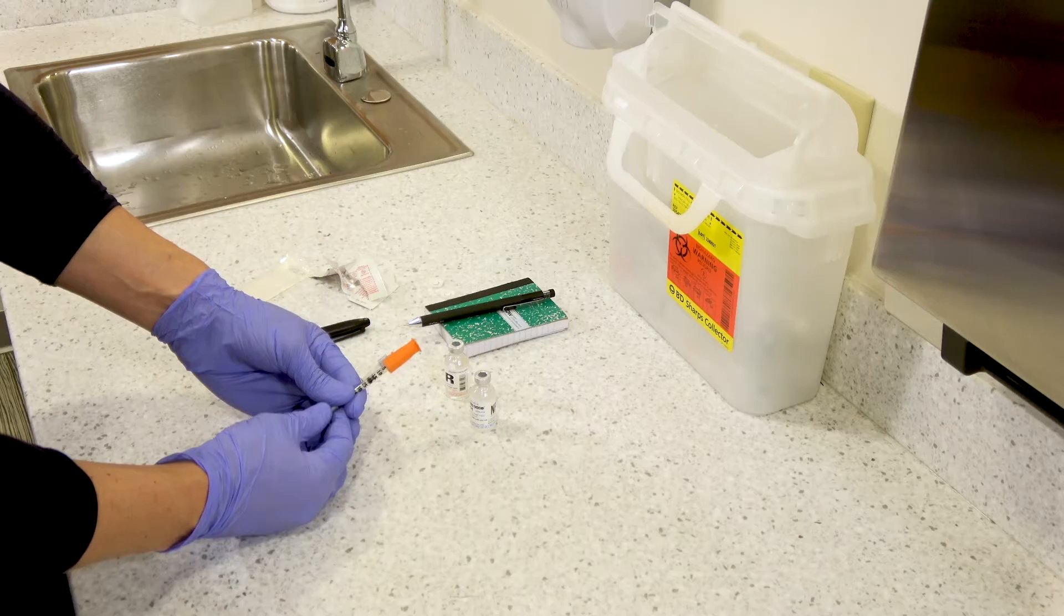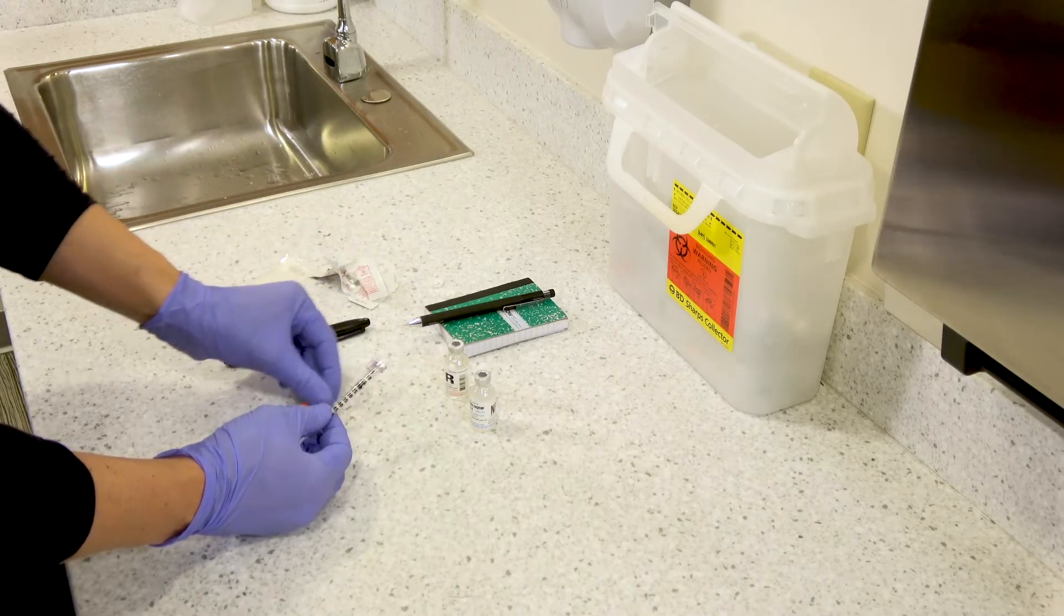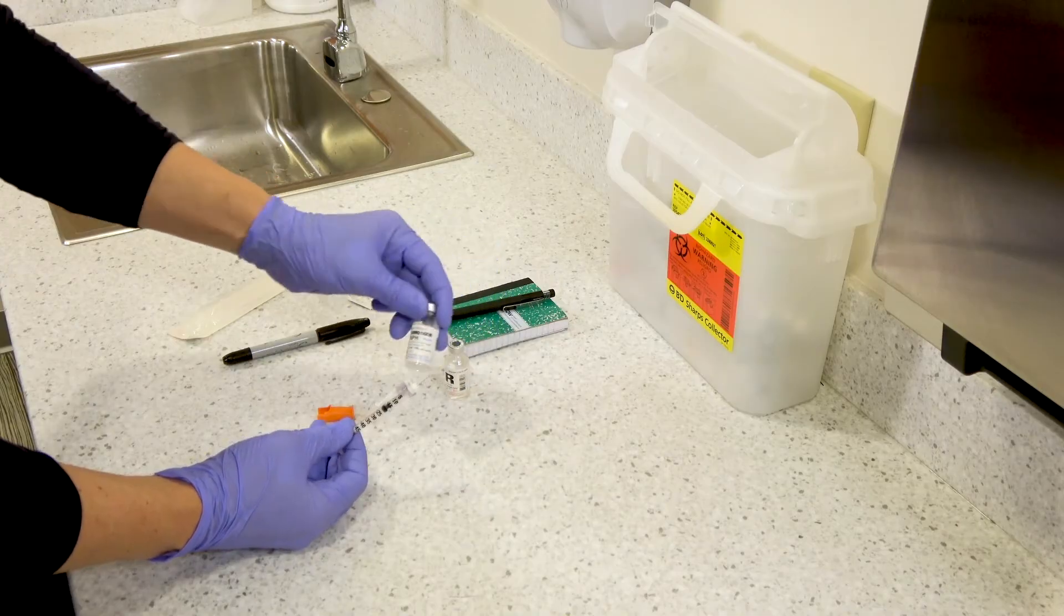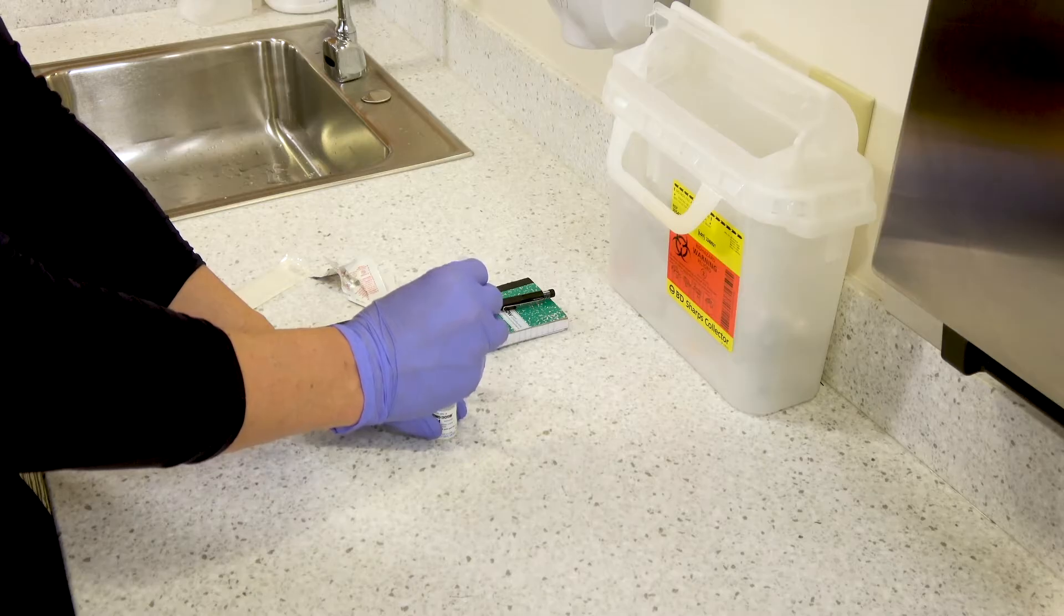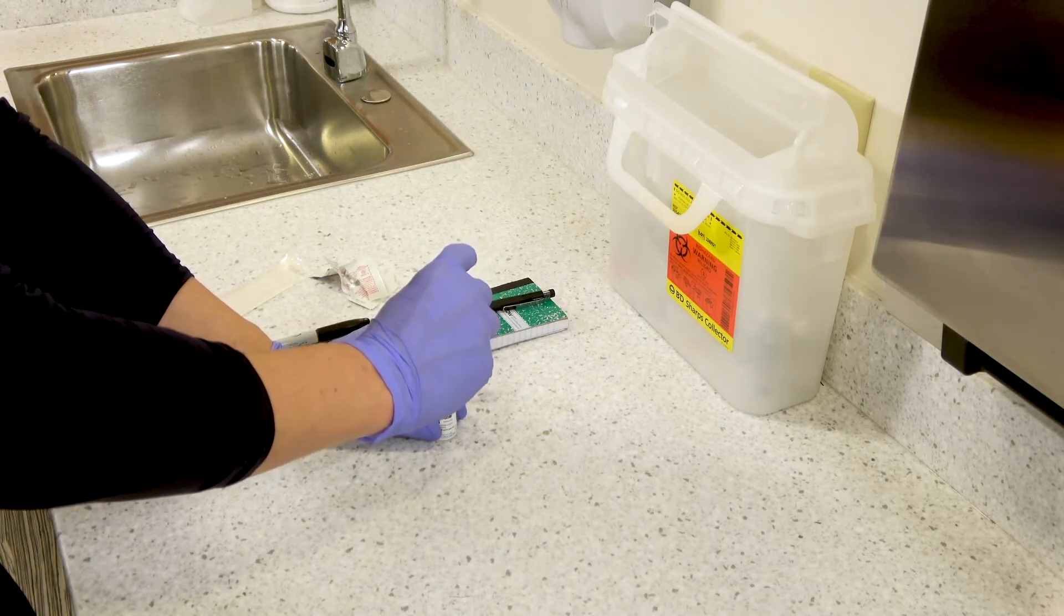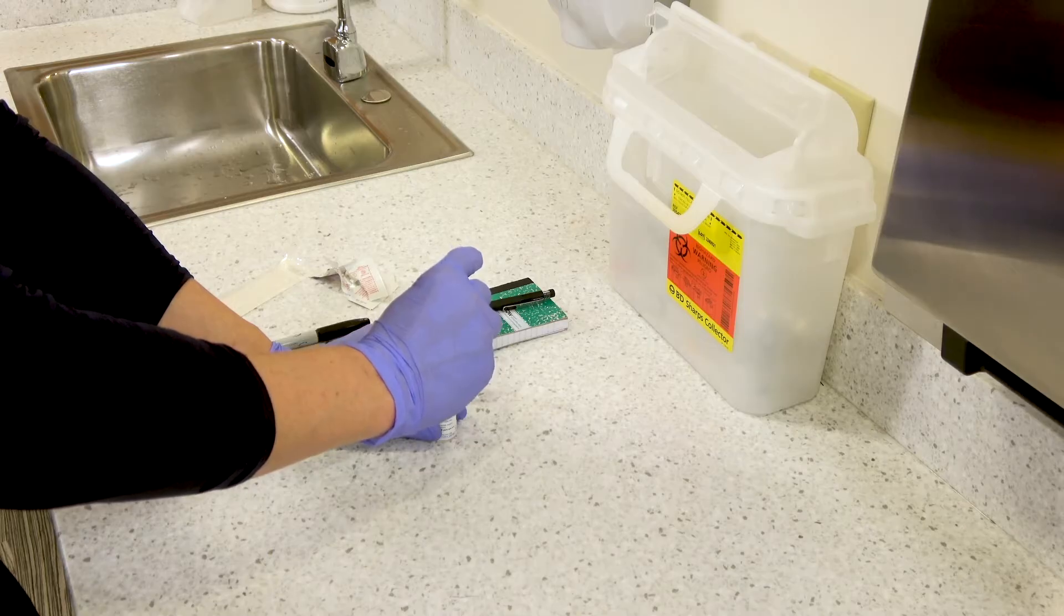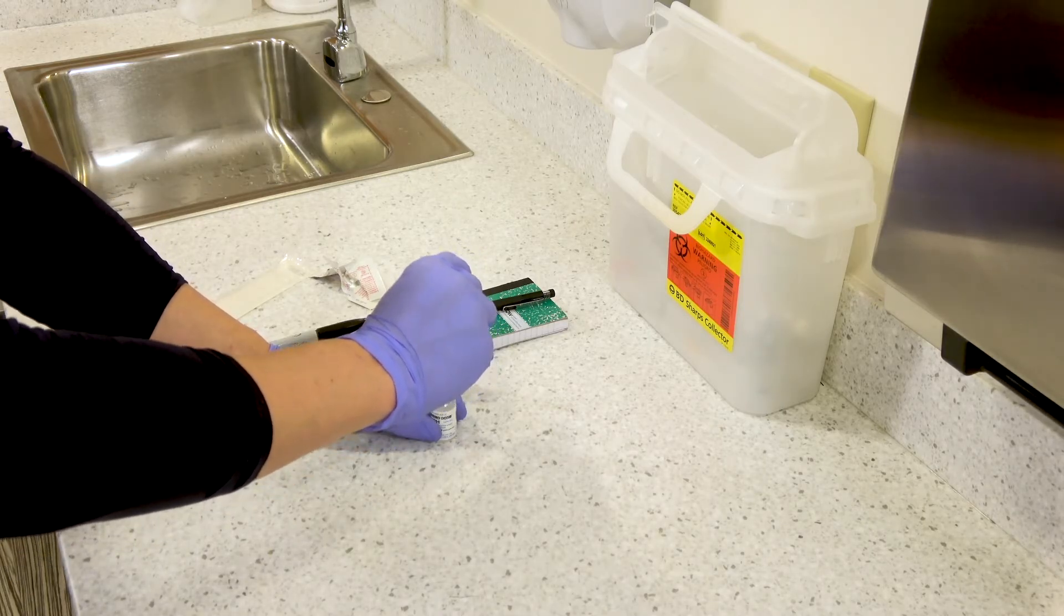Now insert the needle into the NPH vial and inject the dose of air for NPH into the vial. In this case 10 units. So inject the 10 units of air into the NPH vial and then you'll still have 5 units of air in the needle and you can remove the NPH vial.